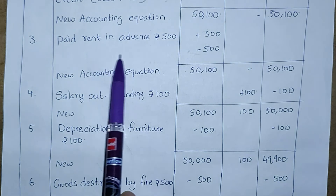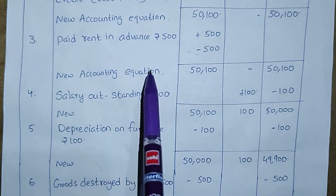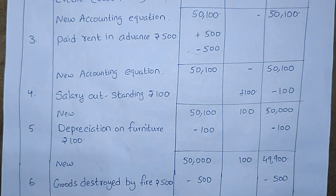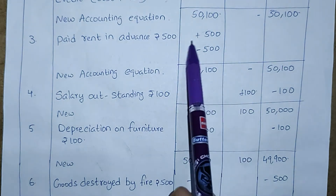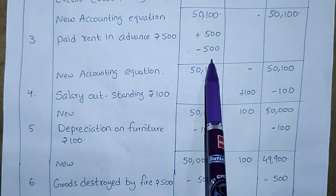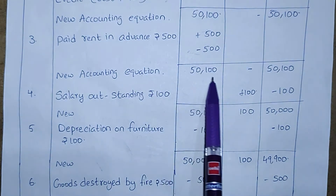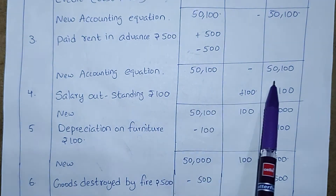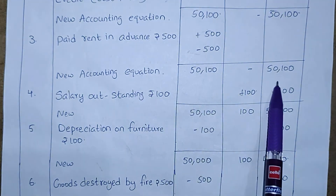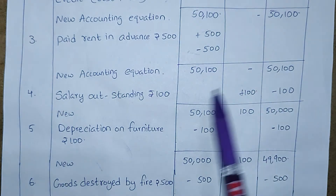Paid rent in advance Rs. 500. He has already paid 500 rupees in advance. So 500 is paid and 500 is minus from assets. New accounting equation remains 50,100. In this capital also it remains 50,000.